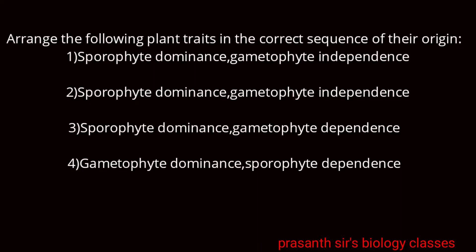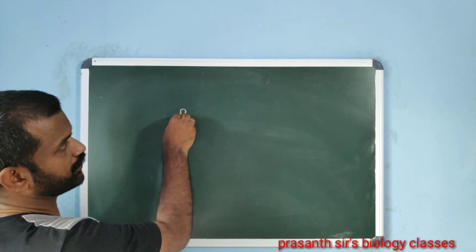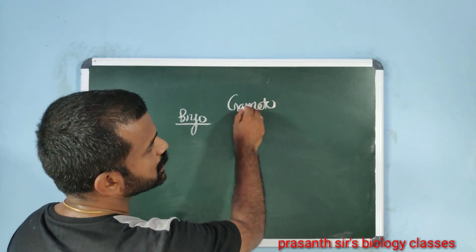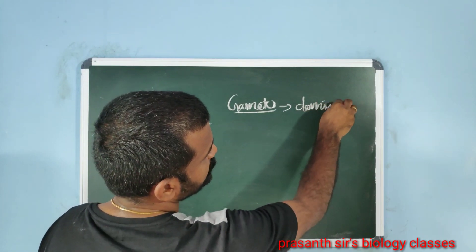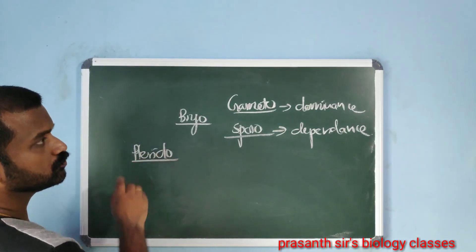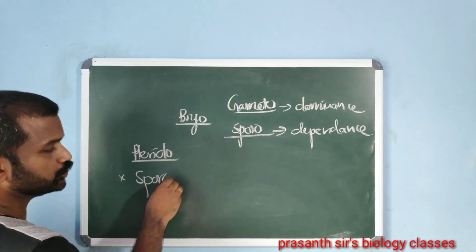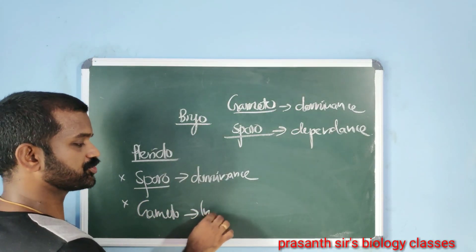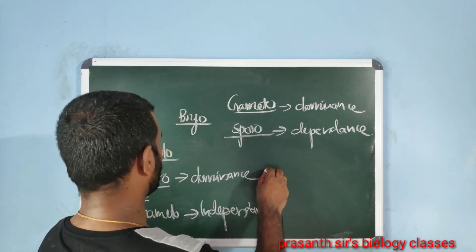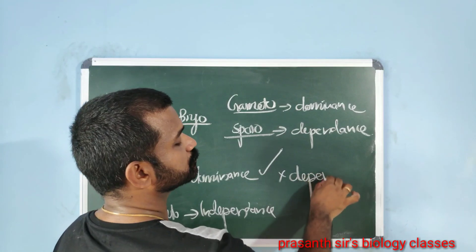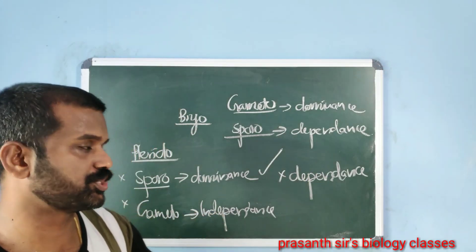Arrange this in the character sequence of the origin. In bryophytes, there is gametophyte dominance and sporophyte dependence. At the same time gametophyte independence occurs. Then in gymnosperms and angiosperms, there is sporophyte dominance and gametophyte dependence. So that is the character sequence of the origin of the traits.